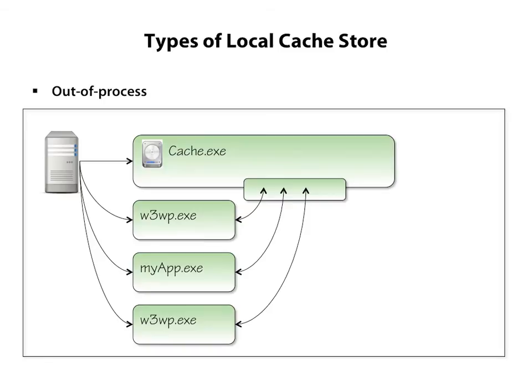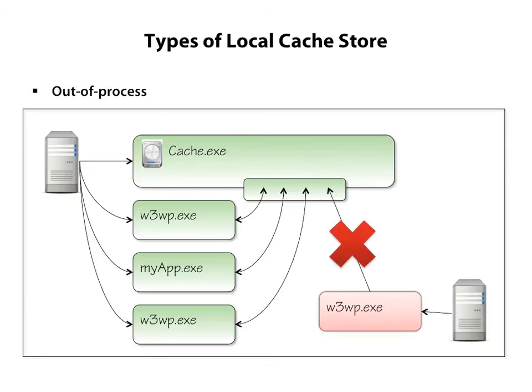Out-of-process caches can usually be configured to allow remote access, but in this module we'll be using them purely as local cache stores, so we won't open any firewall ports and our store will be limited to local access.